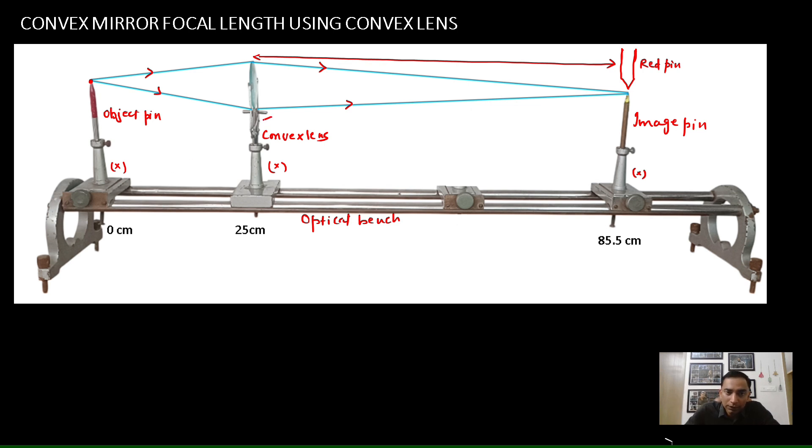Now, the distance from the convex lens to that of the image pin is the same distance between the convex lens and the image of the red pin.